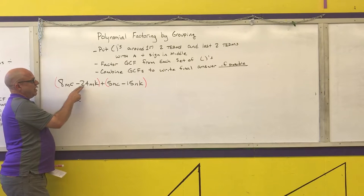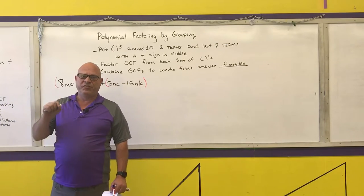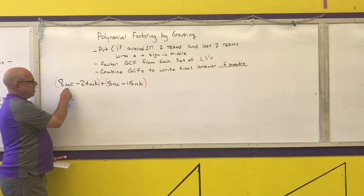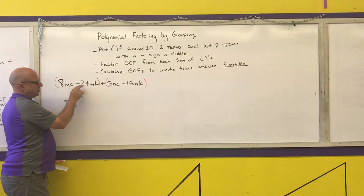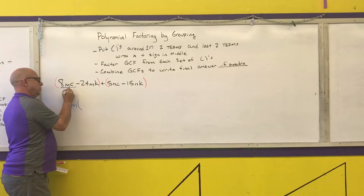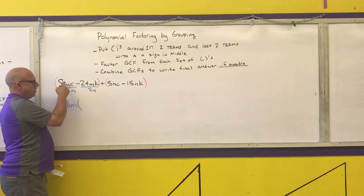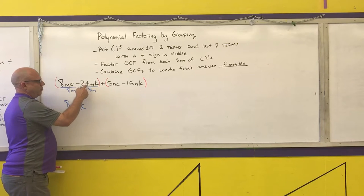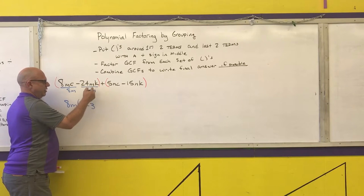The biggest number in common between 8 and 24 is 8. Write down each variable that appears in every term to its lowest power — in the first group, M appears in every term and its lowest power is the first; C only appears in one term and K only in the other, so neither is used. After division: 8 divided by 8 is 1, M over M is 1 leaving C; negative 24 divided by 8 is negative 3, M over M is 1 leaving K.